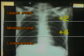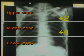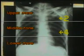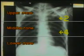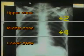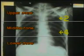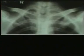Now first study the lung fields in three zones: upper, middle and lower. The upper zone is the area above the anterior end of the second rib. The lower zone is the area below the anterior end of the fourth rib, and the middle zone is between the anterior ends of the second and fourth ribs.